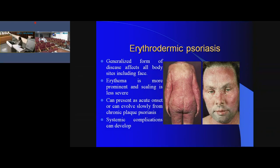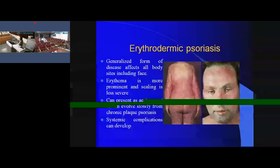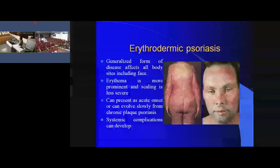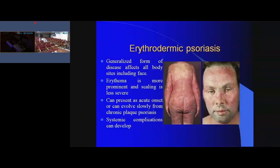Patients with erythrodermic psoriasis may develop systemic complications due to rapid loss of corneocytes, including protein loss leading to hypoproteinemia, anemia, and hypocalcemia. There is also a problem with thermoregulation — because of extensive erythema there is heat loss, so the patient can have chills and rigors. These systemic complications require prompt management.